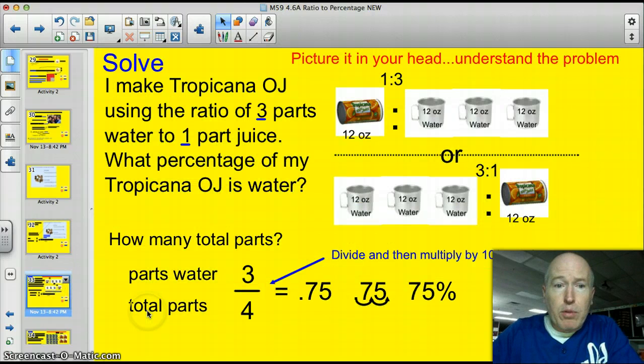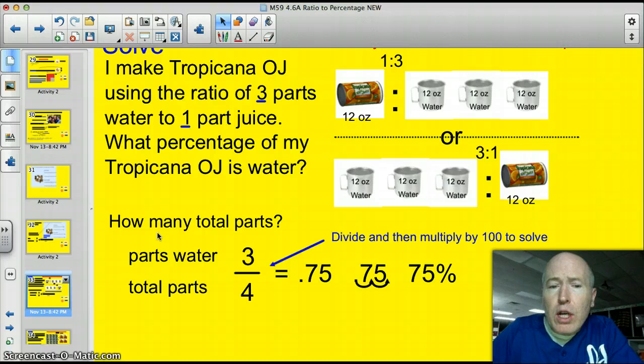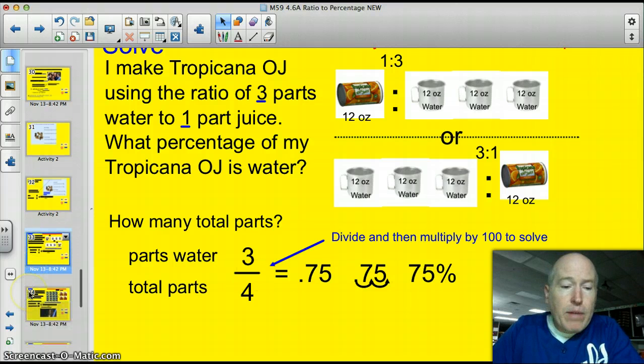Let's take a look at another example. I make Tropicana orange juice using the ratio of three parts water to one part juice. What percentage of my Tropicana OJ is water? For all of these examples, I want you to first make a picture just like I did. I think that's important that you can visualize it. It's an important skill. So, I drew it out. Here's my one can of Tropicana, and here are my three parts water. One to three, and I labeled it. I also could go three parts water to one part juice. Then comes the all-important question. How many total parts are there? Well, I can add them up. There's a total of three plus one or four parts, and three of them are water. So, what percentage of my Tropicana OJ is water? Well, I've got my fraction. Three parts water to a total of four parts. The simple stuff happens. Divide it, we get .75. Multiply by 100, we've got 75%.